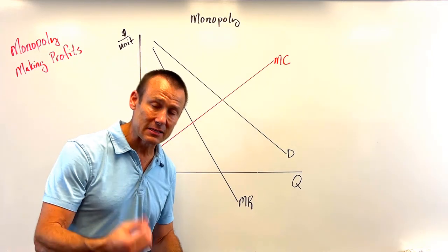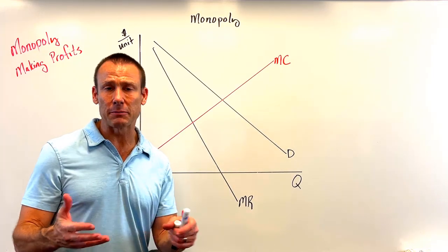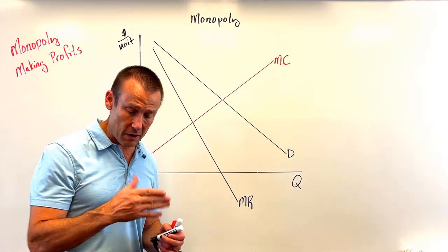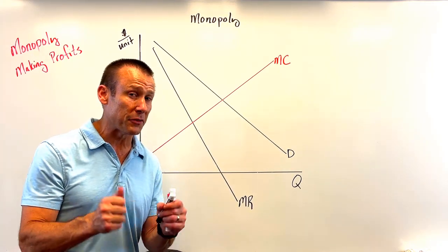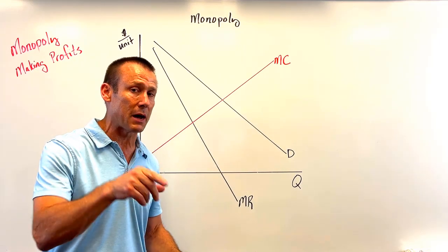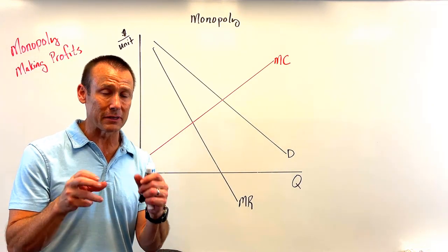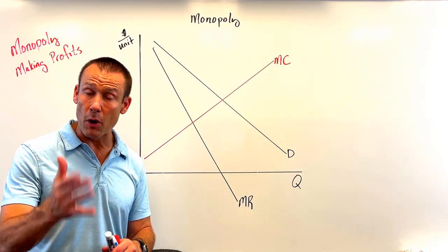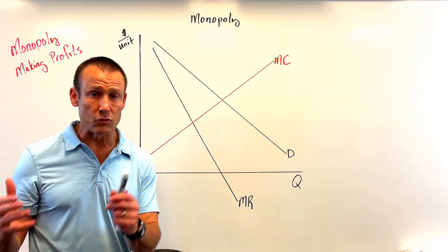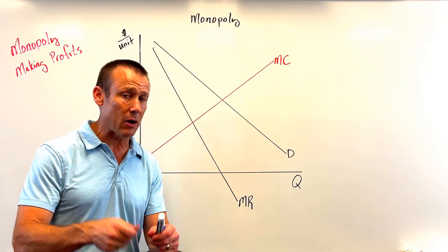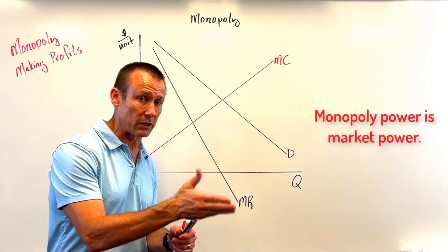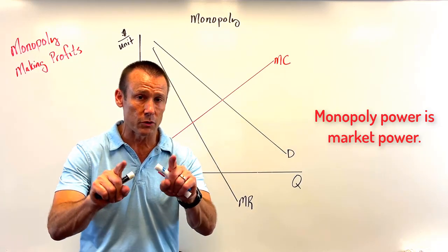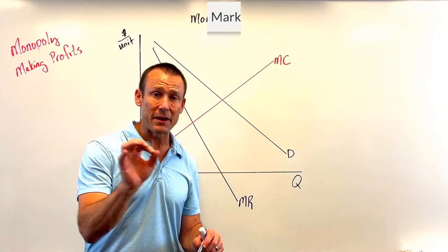In monopolistic competition, the firm has a small bit of monopoly power — they're making a particular good nobody else can make, but there are a lot of close substitutes. Monopoly is a situation where they're making a good with no close substitutes. But in both situations they're making a unique product and have monopoly power, i.e. market power. So what we're doing is showing a firm that has market power making profits.